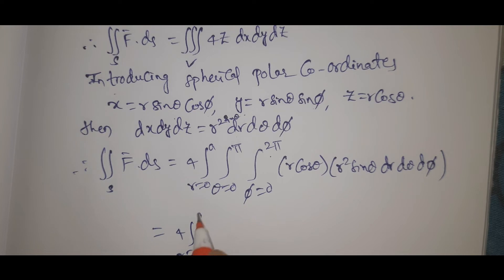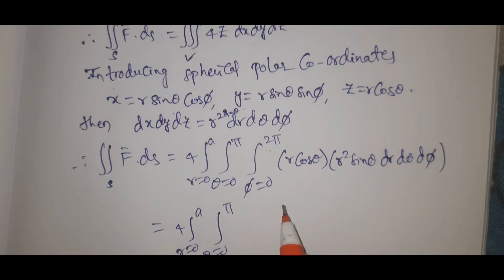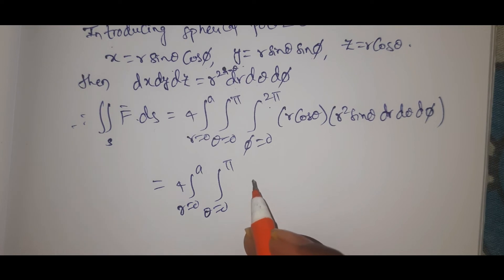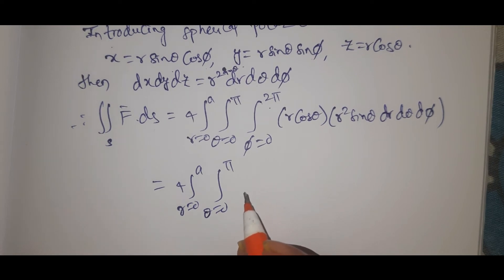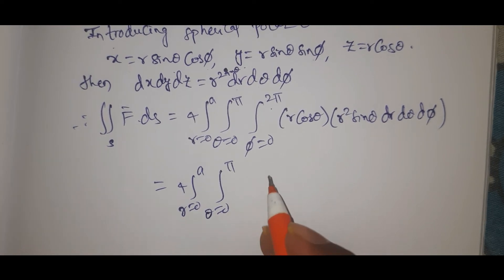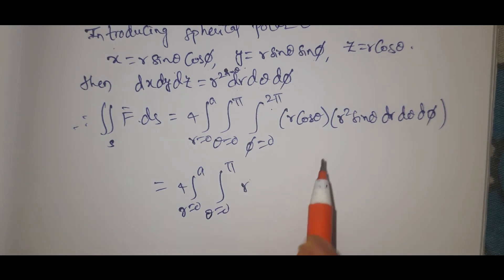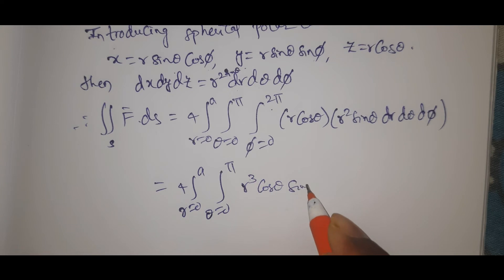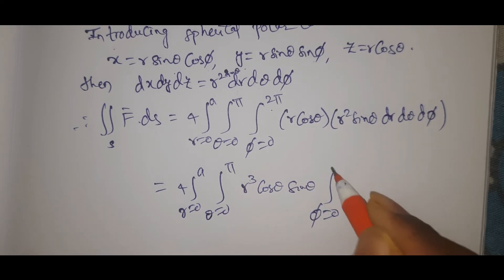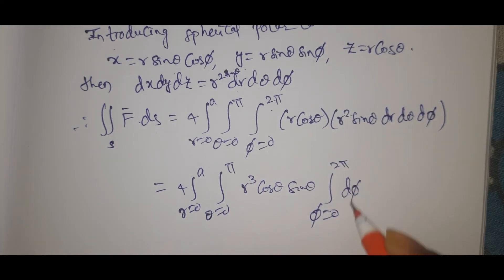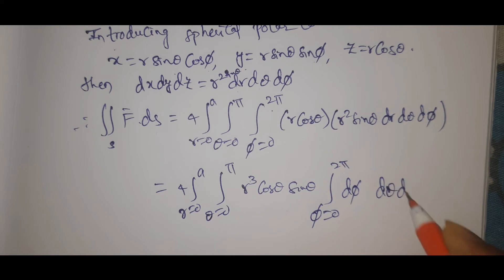The solution: 4 integral r = 0 to a, theta = 0 to pi, phi = 0 to 2π. R³ cos theta sin theta dphi dtheta dr.